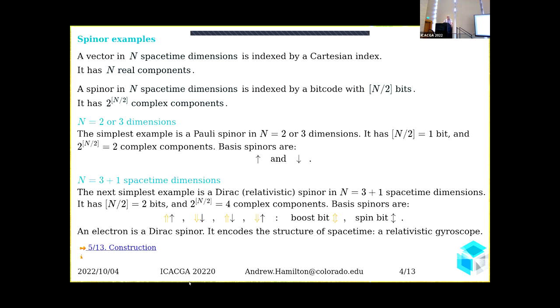In four dimensions, we live in three plus one space-time dimensions. One has a Dirac spinor introduced by Dirac, which is essentially a relativistic version of a Pauli spinor. It has 4/2 = 2 bits and four complex components. Its basis spinors consist of up-up, down-down, up-down, and down-up. These two bits consist of a boost bit which aligns with the direction of motion of the spinor and a spin bit. If the boost and spin bits are aligned, it's called right-handed; if anti-aligned, the Dirac spinor is called left-handed.